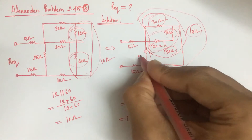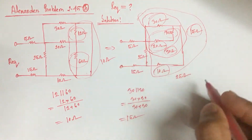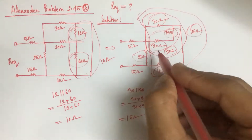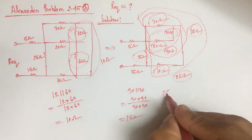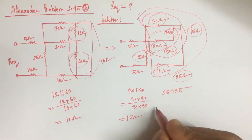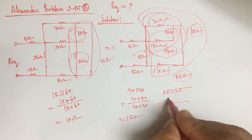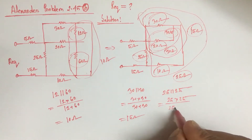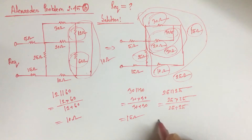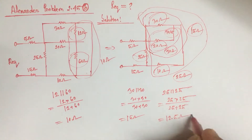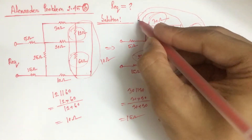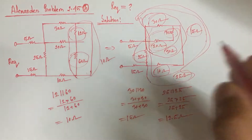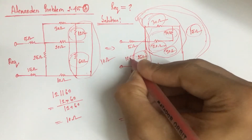Now, this 25 ohm resistance is in parallel with 25 ohm resistance. So two equal 25 ohm resistances can be replaced by a resistance of 12.5 ohm. The whole part resistance can be replaced by 12.5 ohm.